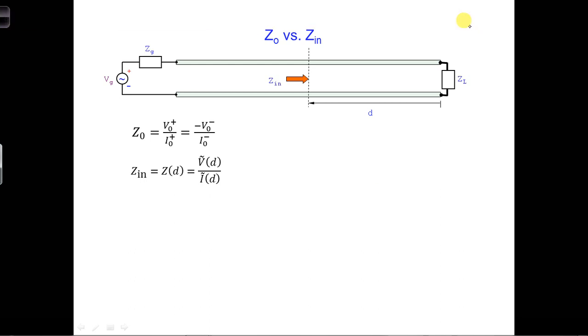Z-naught is still the characteristic impedance of the transmission line by itself. The difference between Z-naught and Z-in is shown here.